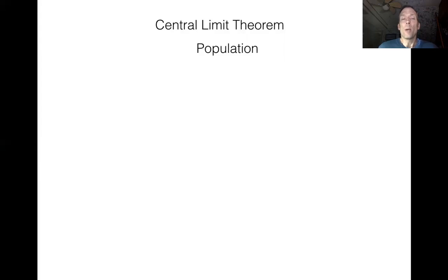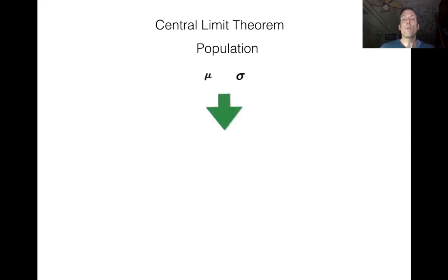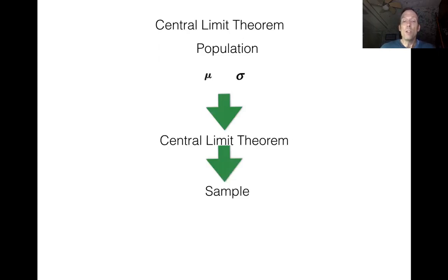So what does it say? If we know a little something about a population — and it doesn't matter what the population is, it doesn't matter what it looks like, whether the data is skewed right, skewed left, bimodal, trimodal, you name it — as long as we know the average and the standard deviation of the population, we can take a sample and use the Central Limit Theorem to analyze the behavior of that sample.